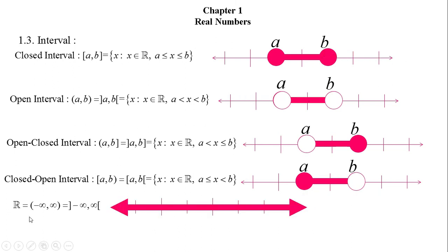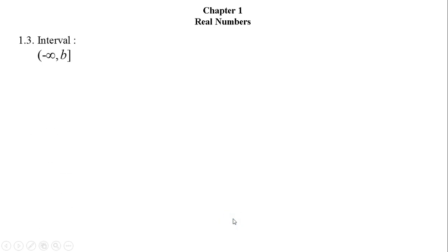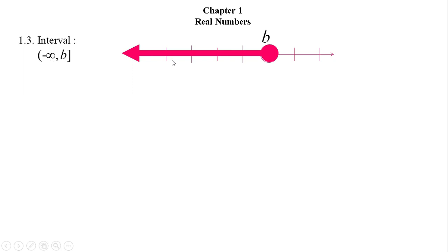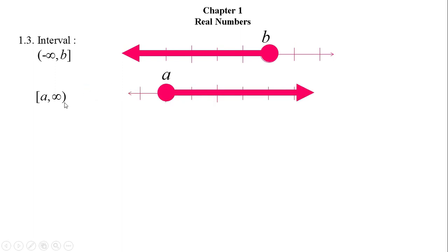We also consider the set of real numbers as this interval — that means minus infinity to plus infinity — and here it is always an open interval. The number line of the set of real numbers is shown here. There are also some special types of intervals, such as the open-closed type where B is closed and minus infinity is open, meaning where it starts is unknown. Similarly, another type where A is closed and infinity is open means there is no end on the right side.